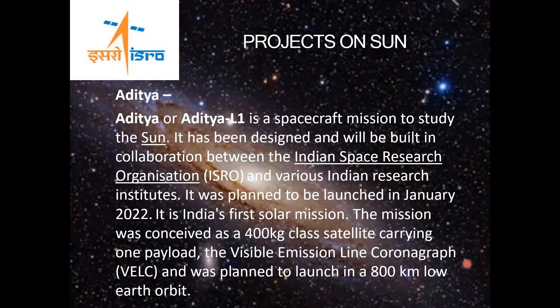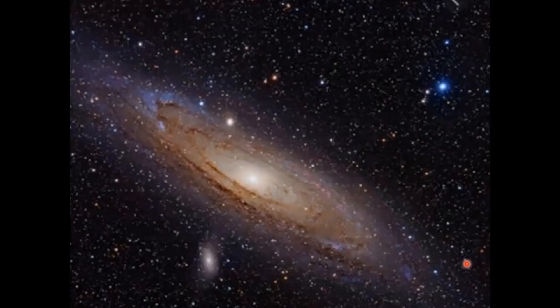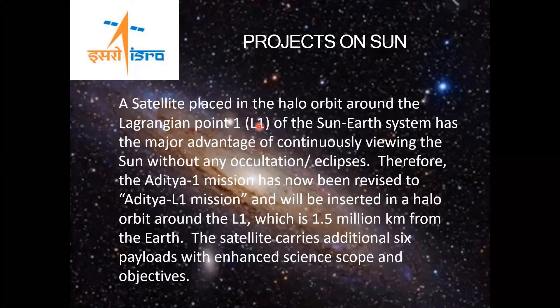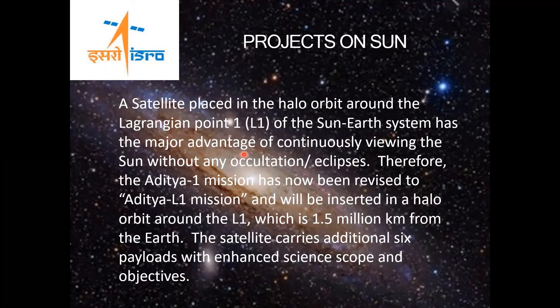The mission was conceived as a 400 kg class satellite carrying one payload. The Visible Emission Line Coronagraph, VELC, was planned to launch in an 800 kilometer low Earth orbit. A satellite placed in the halo orbit around the Lagrangian point 1, or L1, of the Sun-Earth system has the major advantage of continuously viewing the Sun without any occultation or eclipses.